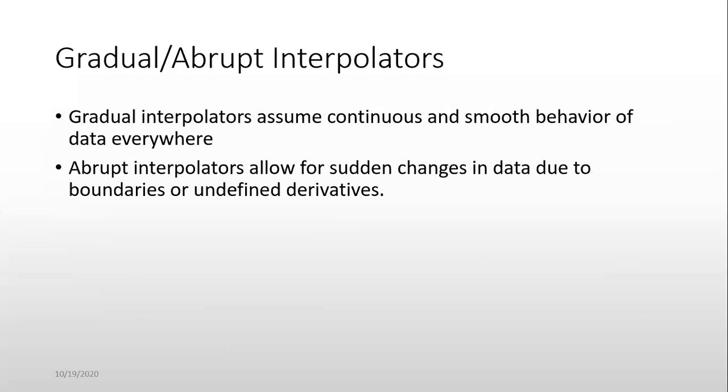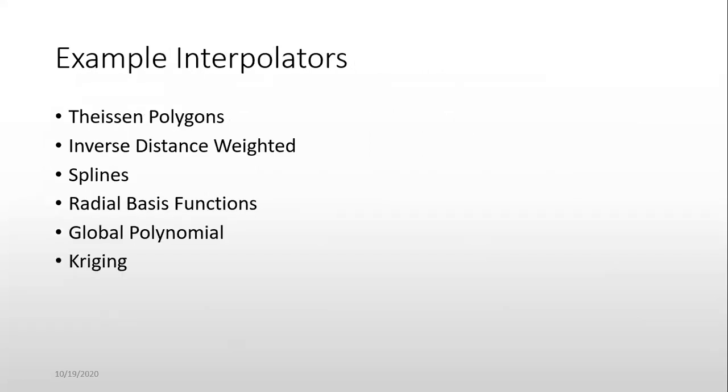Gradual versus abrupt interpolators. Gradual interpolators assume continuous and smooth behavior of data everywhere. Abrupt interpolators allow for sudden changes in data at boundaries or unidentified diversities. Derivatives, deviations. Example of interpolators.